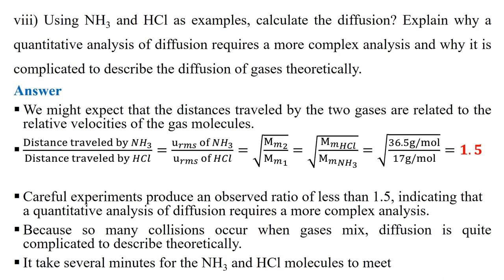Using ammonia and HCl as an example: we might expect that the distance traveled by the two gases is related to their relative velocities, specifically the root mean square velocity. So the distance traveled by ammonia over the distance traveled by HCl equals the RMS velocity of ammonia over the RMS velocity of HCl, which equals √(M_HCl / M_NH3) = √(36.5 / 17) ≈ 1.5.